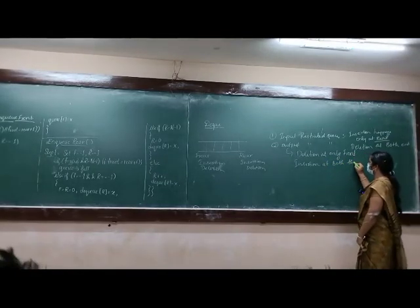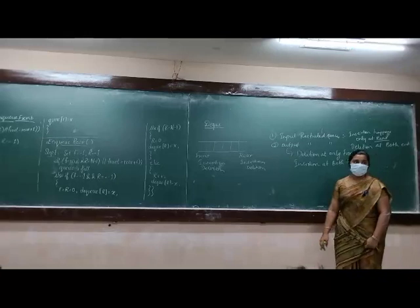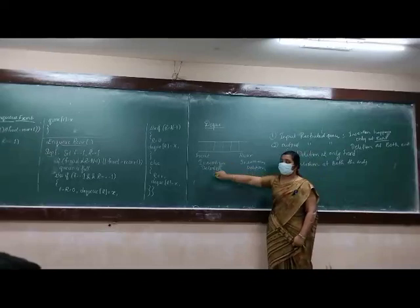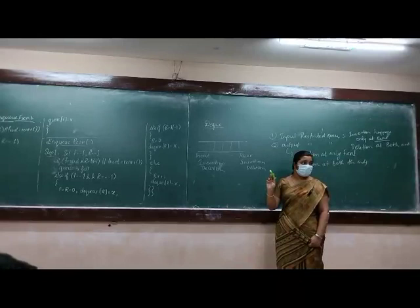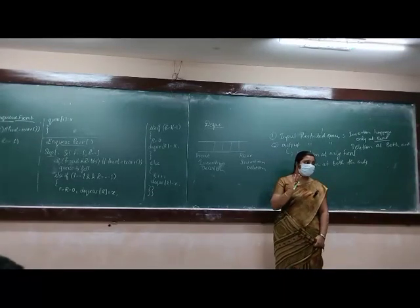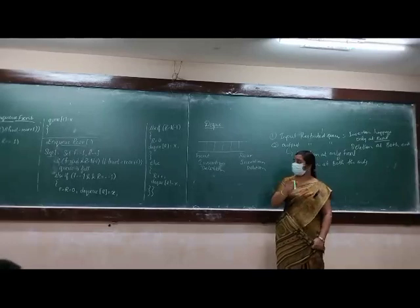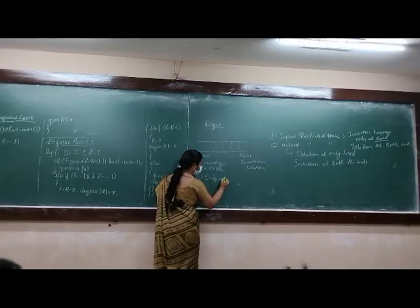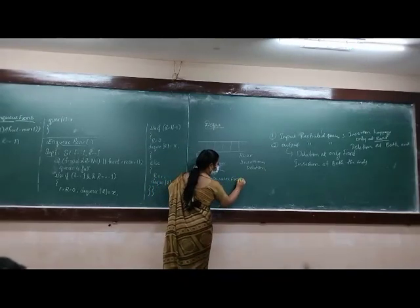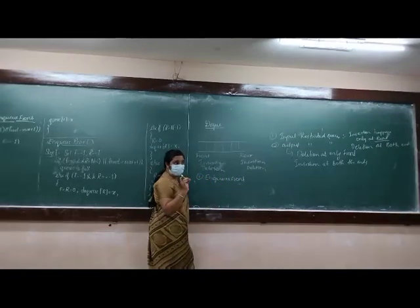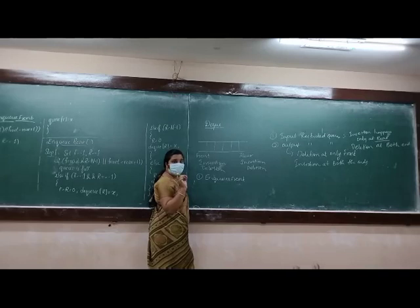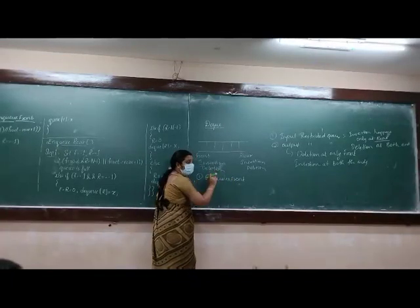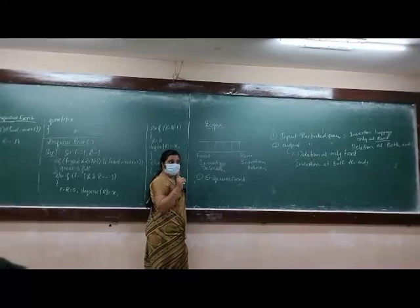Insertion at both ends. These are the two types of deques. Now insertion and deletion happens at both front end and rear end. So we have four operations on this deque. What are the operations? First one: NQ — NQ means insertion. NQ at front end means insertion at front end.